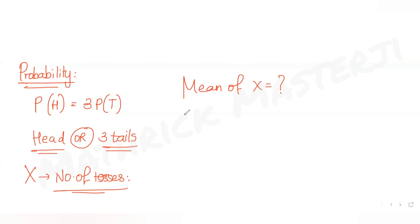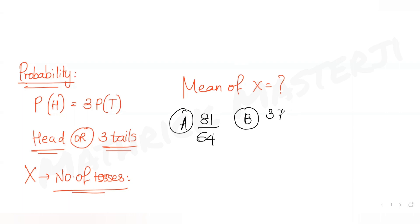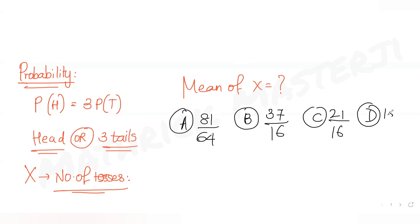So let's see how do we calculate the mean of X. The first option given to us is 81 over 64, second option is 37 over 16, third option is 21 over 16, and the last option is 15 over 16. We need to figure out which one is the correct answer choice.